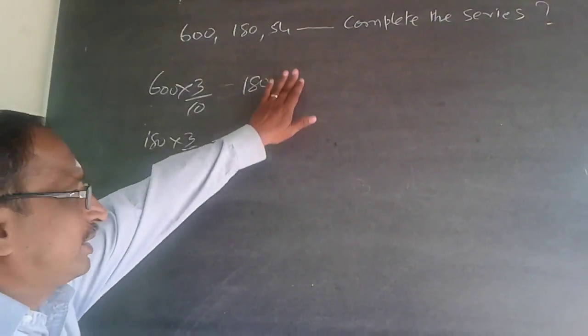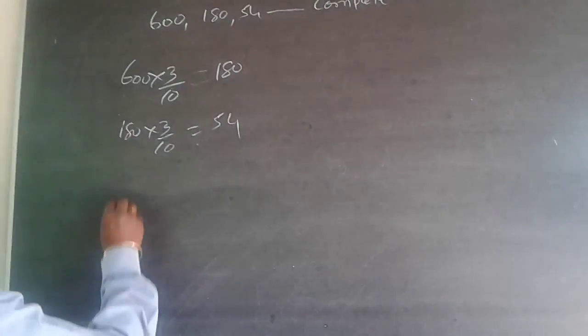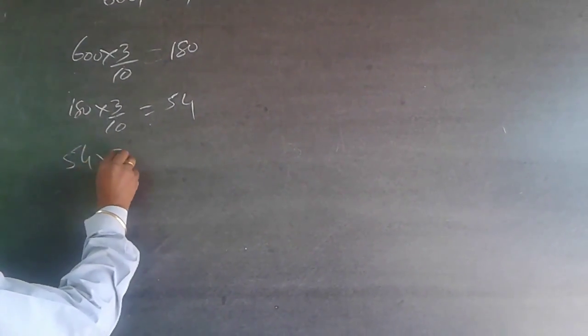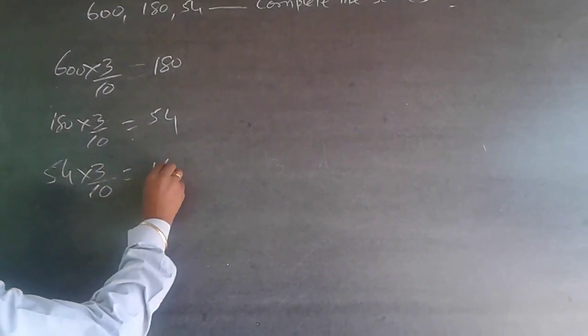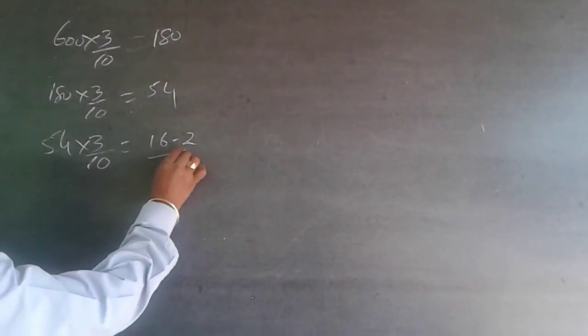54 × 3 ÷ 10 will be equal to 16.2. The answer is 16.2.